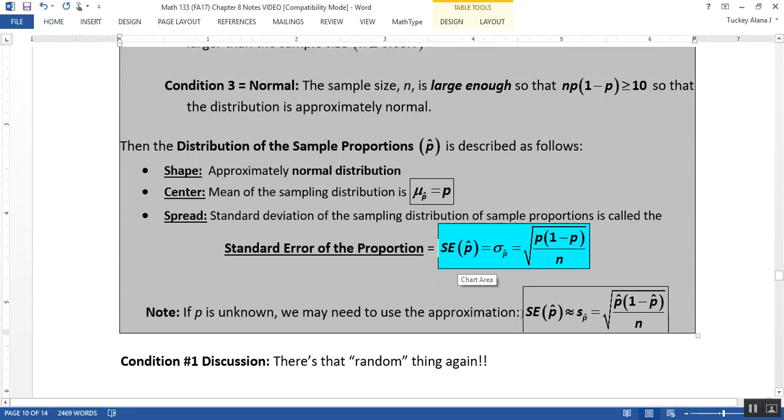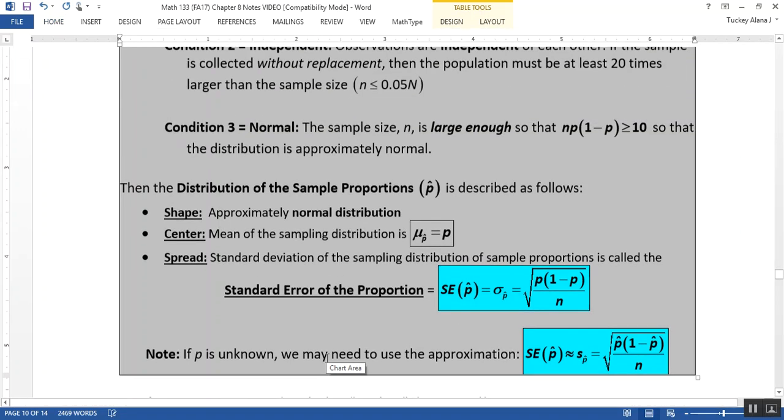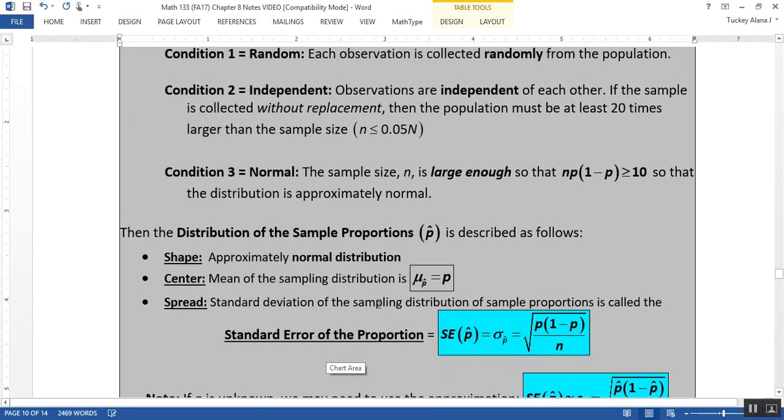Now we often don't know p, especially in chapter 9 that'll be the case. If that happens, then you're stuck using p-hat, which is a slightly weaker version. In that case we abbreviate it as p-hat.